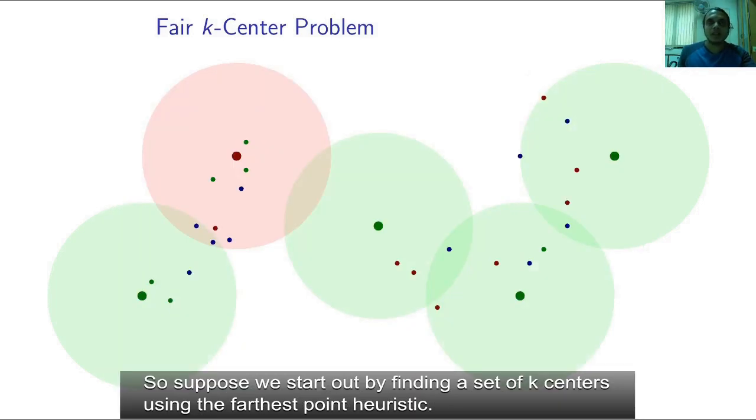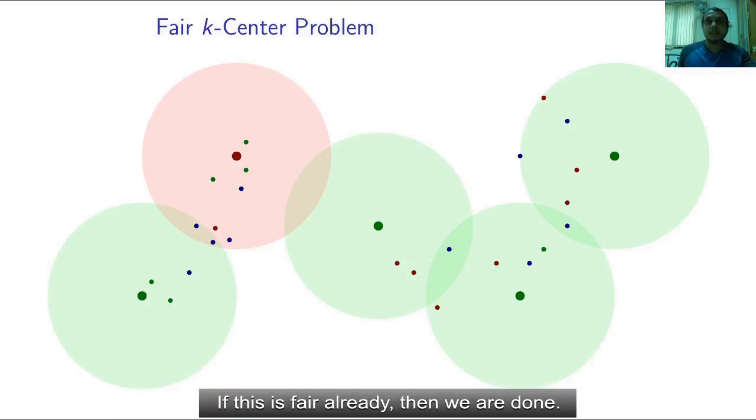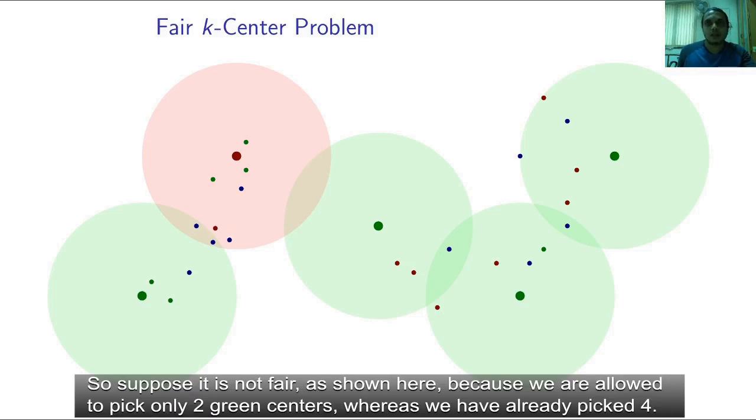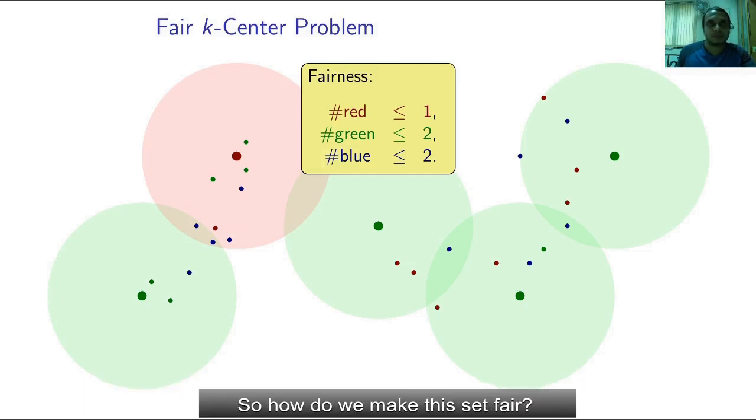So suppose we start out by finding a set of k centers using the farthest point heuristic. If this is fair already, then we are done. So suppose it is not fair as shown here because we are allowed to pick only two green centers whereas we have already picked four. So how do we make this set fair?